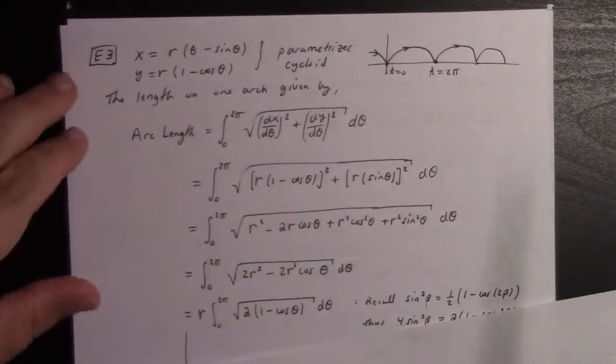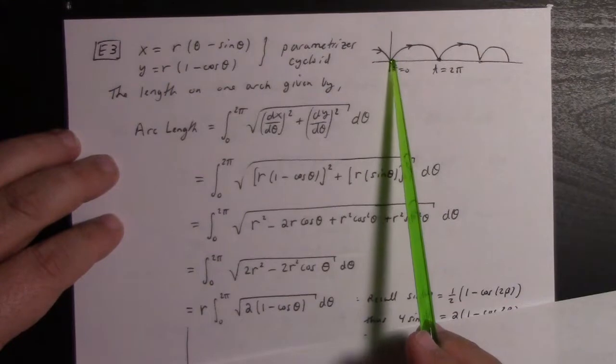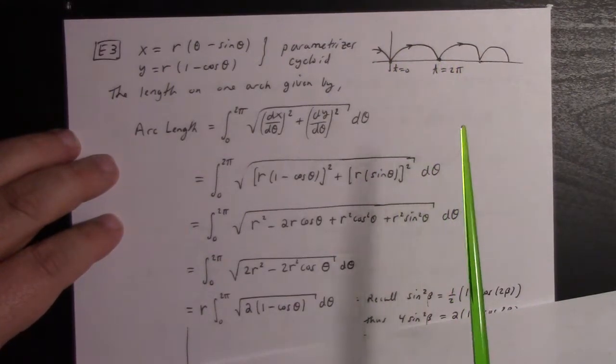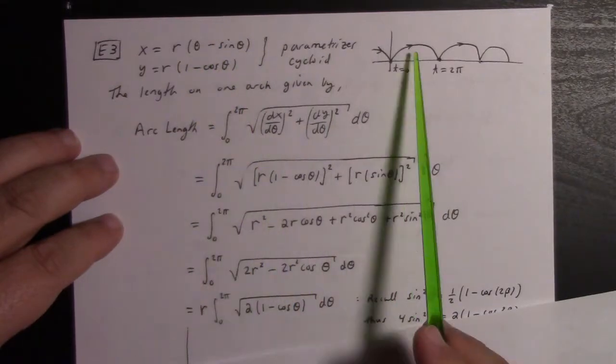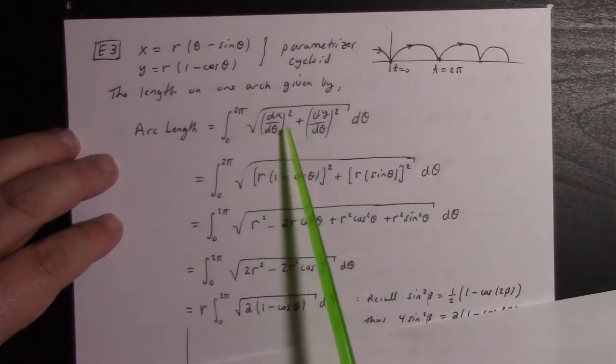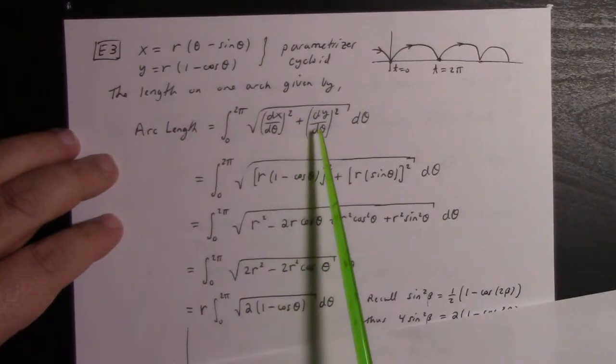To make this arc length make sense, we do need that the curve has continuous derivatives. If you had a curve with discontinuous derivatives, you could get into trouble. Here's an example of an arc length calculation. We calculate the arc length of the cycloid from t=0 to t=2π. These are equations for a cycloid.